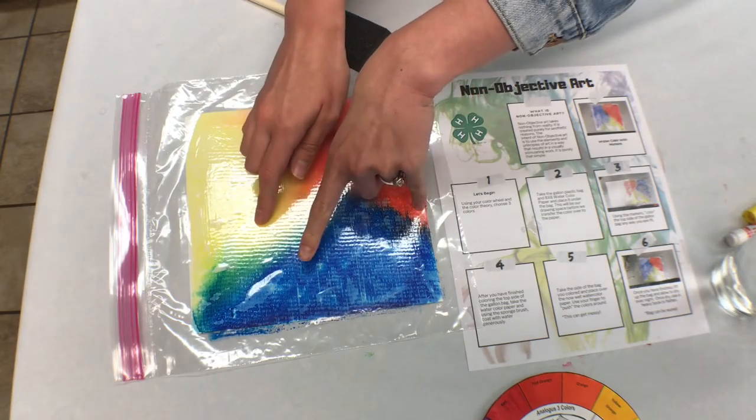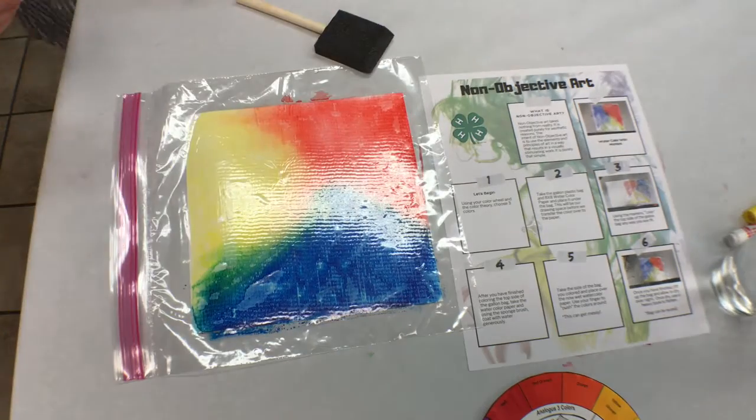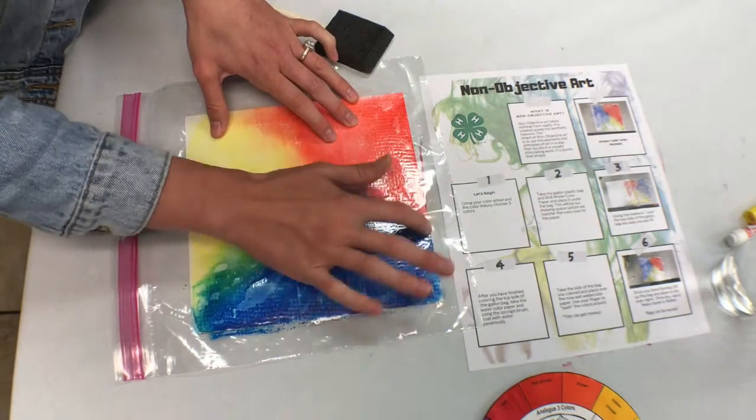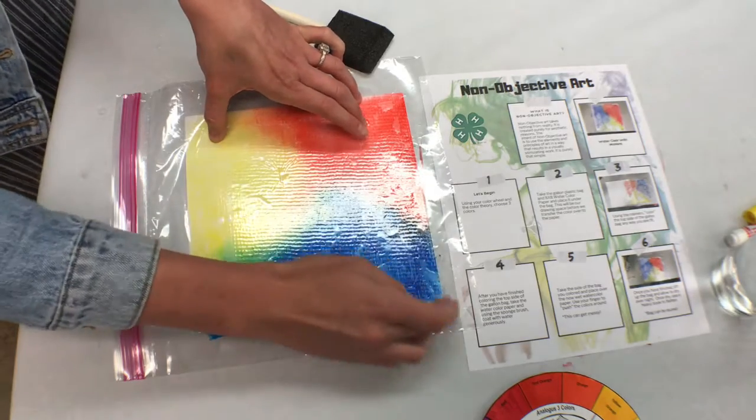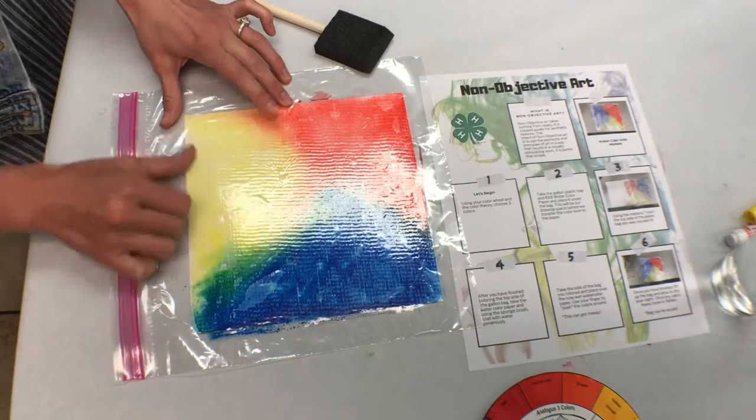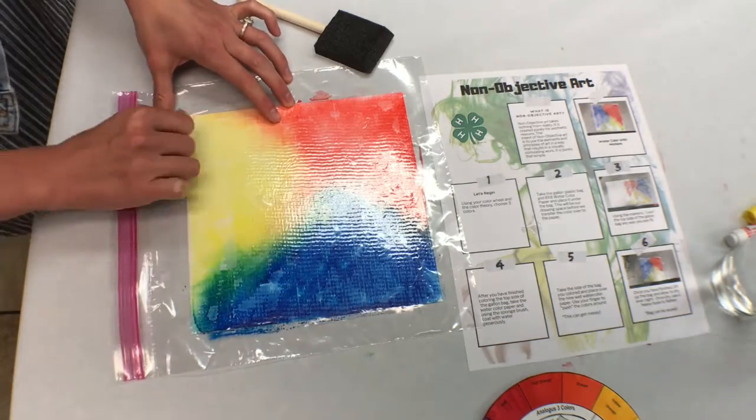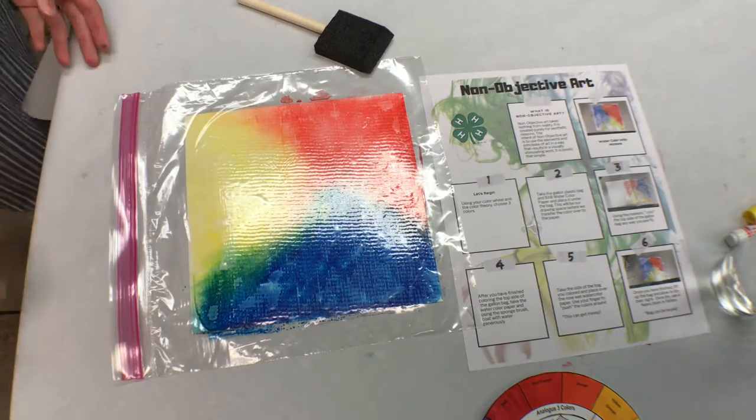So see, you can see yellow and blue make green. You can see over here, you might start to get some purple with this red and blue. Get a little red-orange in here. All kinds of fun things.